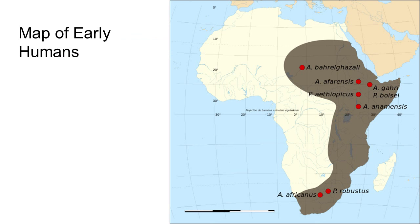Early humans — and we are going to be talking about different groups of these early humans — they developed in Africa. If you look at this map here, you can see some of the different groups of humans that existed. These humans, or species of humans, developed over millions of years. Evolution goes very slowly, and some of these groups existed millions of years ago. At the very bottom you see the A. africanus — the A stands for Australopithecus.